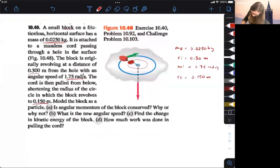So we have the, I think that's everything here. So we have the mass of the block. We have the initial radius and the initial angular velocity, and then the final radius.